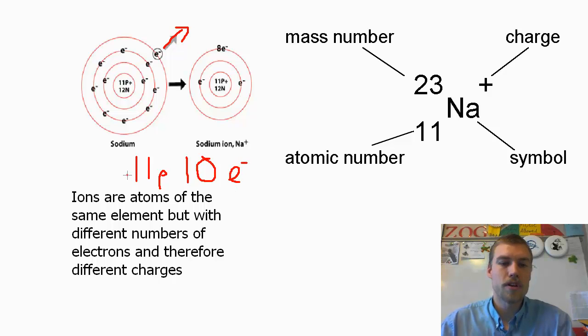Now if you'll notice that this is an imbalance, so we've got a plus 11 and a minus 10. So what does that leave us with? A plus 1 charge.